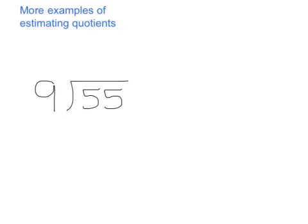More examples of estimating quotients. 55 divided by 9. These numbers are not compatible. The closest compatible number would be 54. So I'm going to think 54 divided by 9 equals 6.